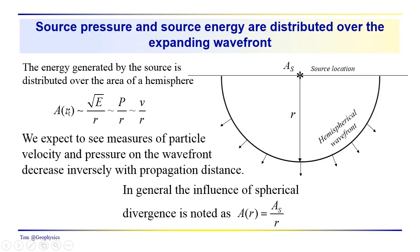We have the relationship for the amplitude of the propagating wavefront at some one-way or two-way travel time: A sub r is proportional to the square root of E over r, p over r, or v over r. Now, p and v are parameters we can measure with a geophone. If we have the reflection coming back to the surface to a geophone, it could be recording pressure variations (as in a hydrophone) or particle velocity variations (as in a land-based geophone). In general, spherical divergence is noted as equal to the source amplitude divided by the distance traveled.